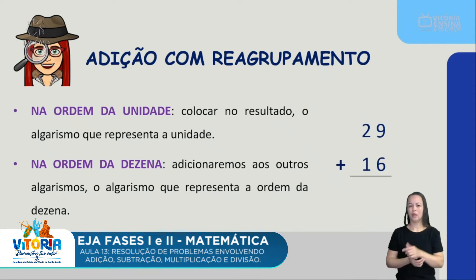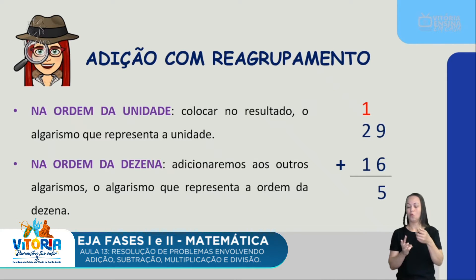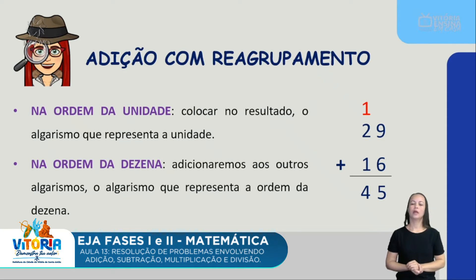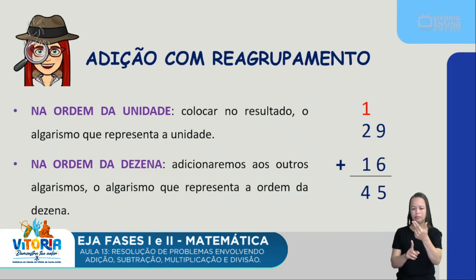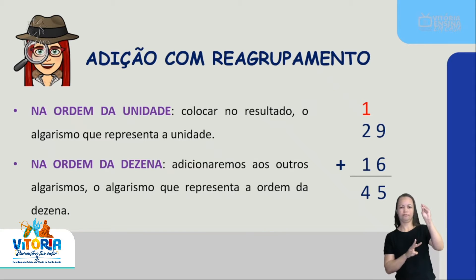Então presta bem atenção: 29 mais 16. Na ordem das unidades, 9 mais 6 dá 15. Vai ficar o 15 completo na ordem das unidades? Não. Coloco o 5 e o algarismo da dezena, que é o 1, vai para a ordem das dezenas. Então faço a adição: 1 mais 2 é 3, mais 1 é 4 — e acho o número 45. Toda vez eu preciso começar pela ordem das unidades, colocar o algarismo das unidades no resultado e levar o algarismo das dezenas para somar com os outros.